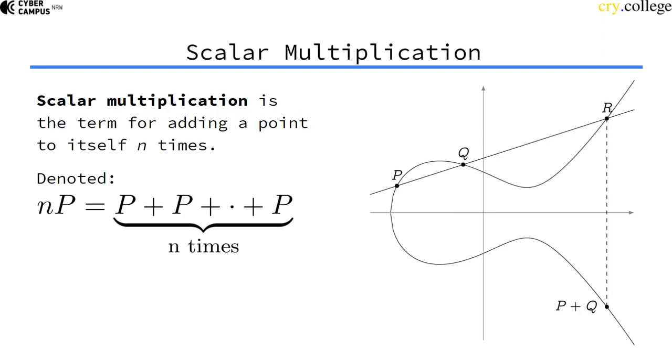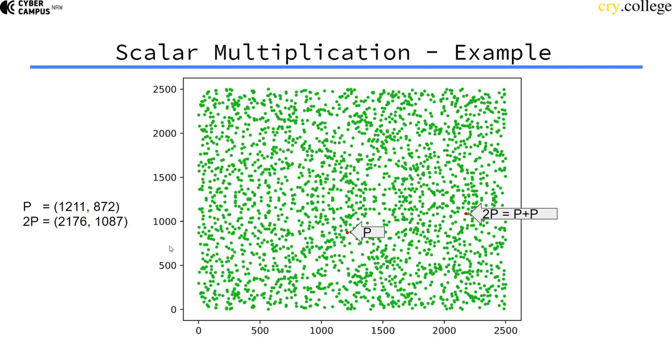So usually it's denoted like this. Scalar, which is a fancy term for just a number, an integer, times a point. And that means we take this point and we add it to itself n times. And that's scalar multiplication.